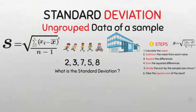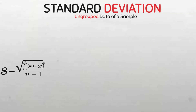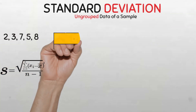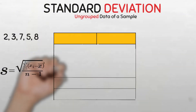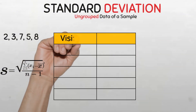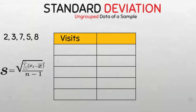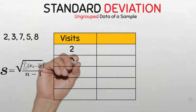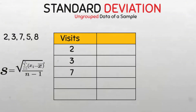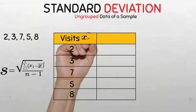It is always better to use a table when computing statistics by hand to make it tidy and easy to calculate. For our data on the number of visits, let us draw a simple table with two columns. In the first column, let us label it with our variable, which is the number of visits, and enter our data values into each row. The data of each child will be represented on one row: the first child had two visits, the second had three, then seven, five, and eight visits. In statistics, the index variable is usually denoted as X sub i, so we will use that notation to follow our formula.